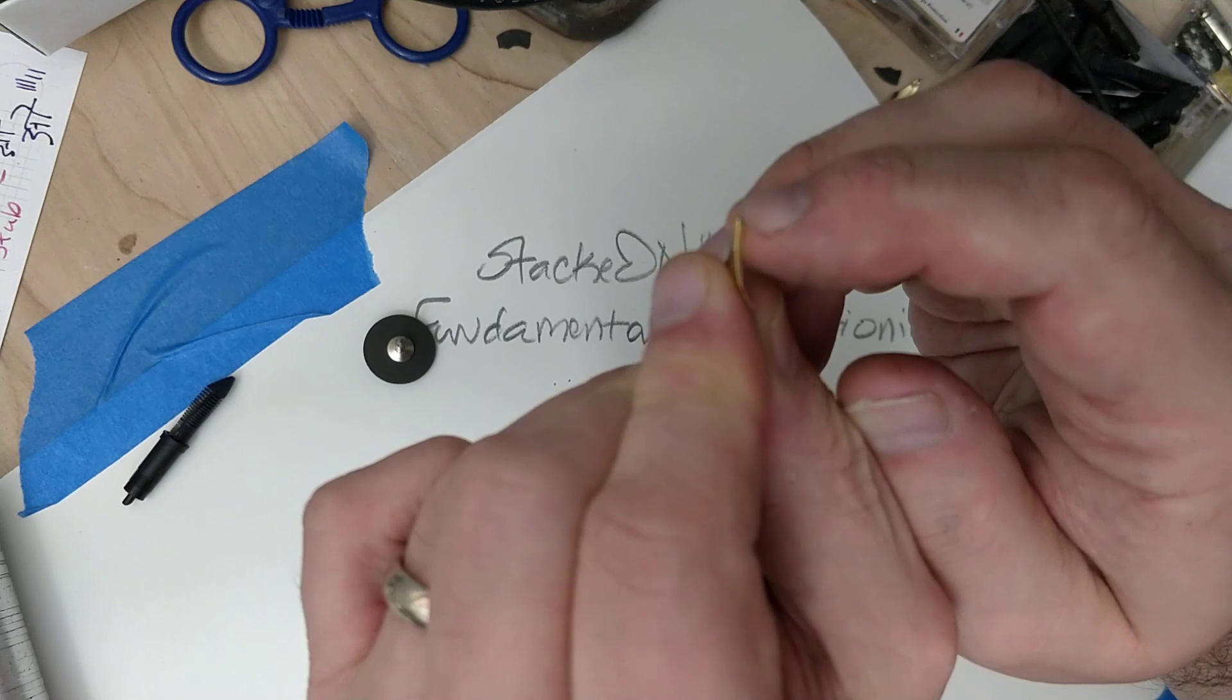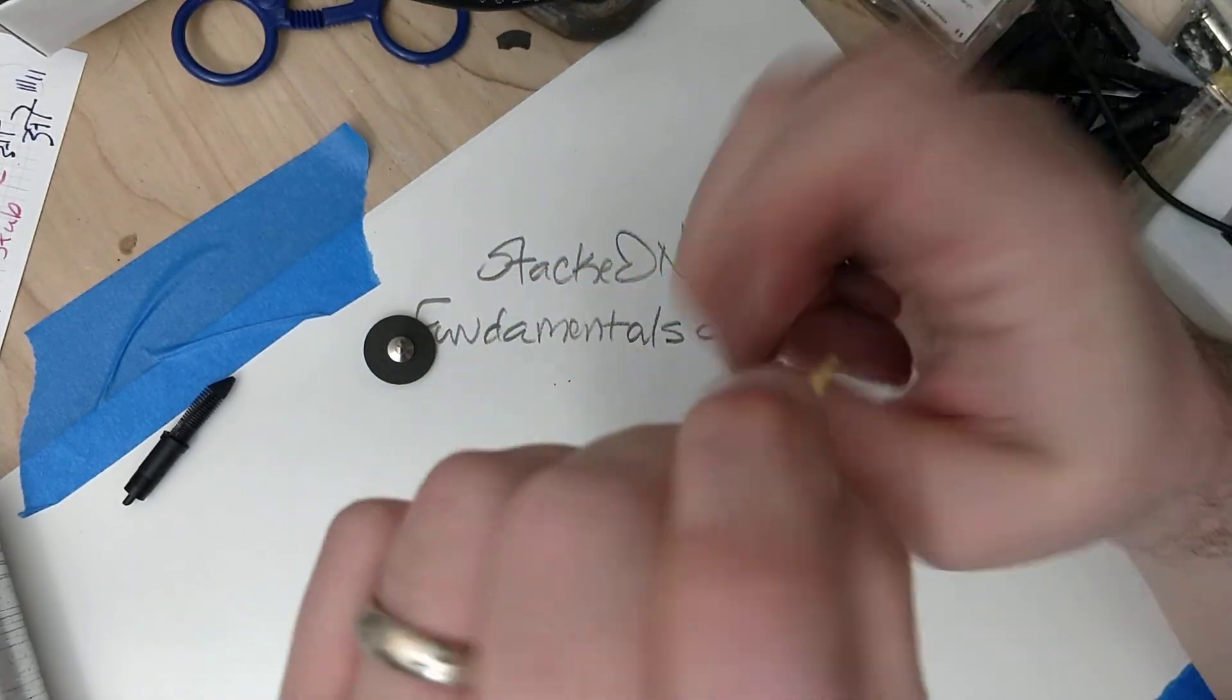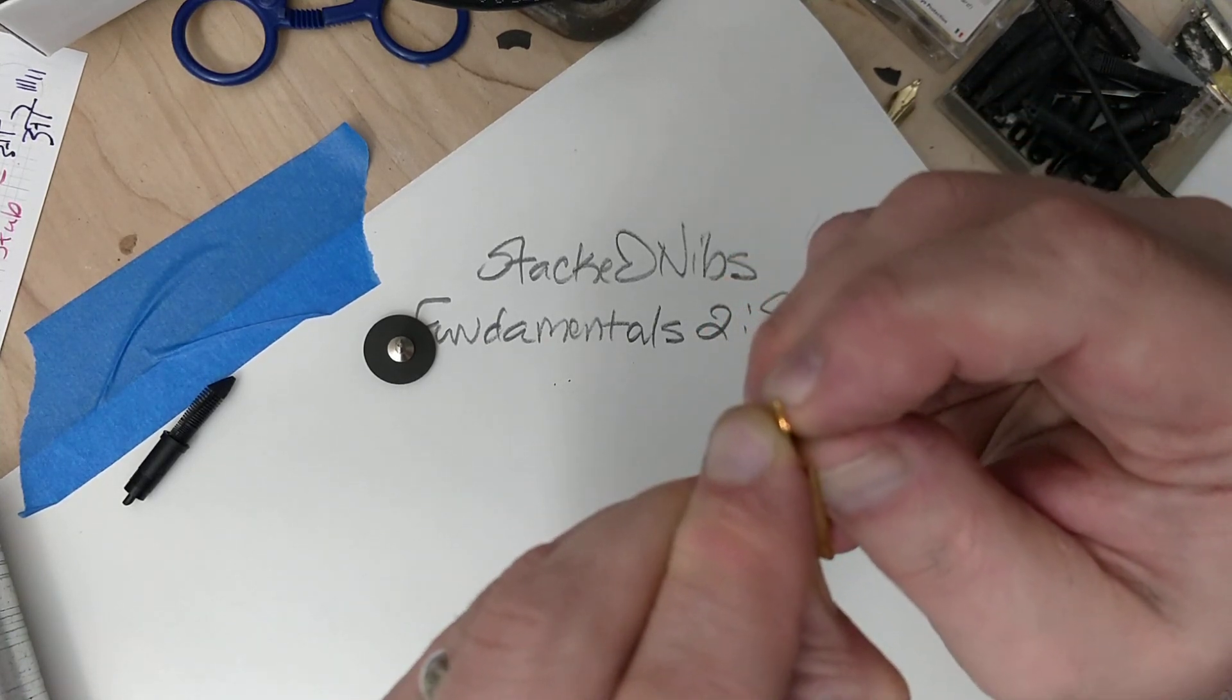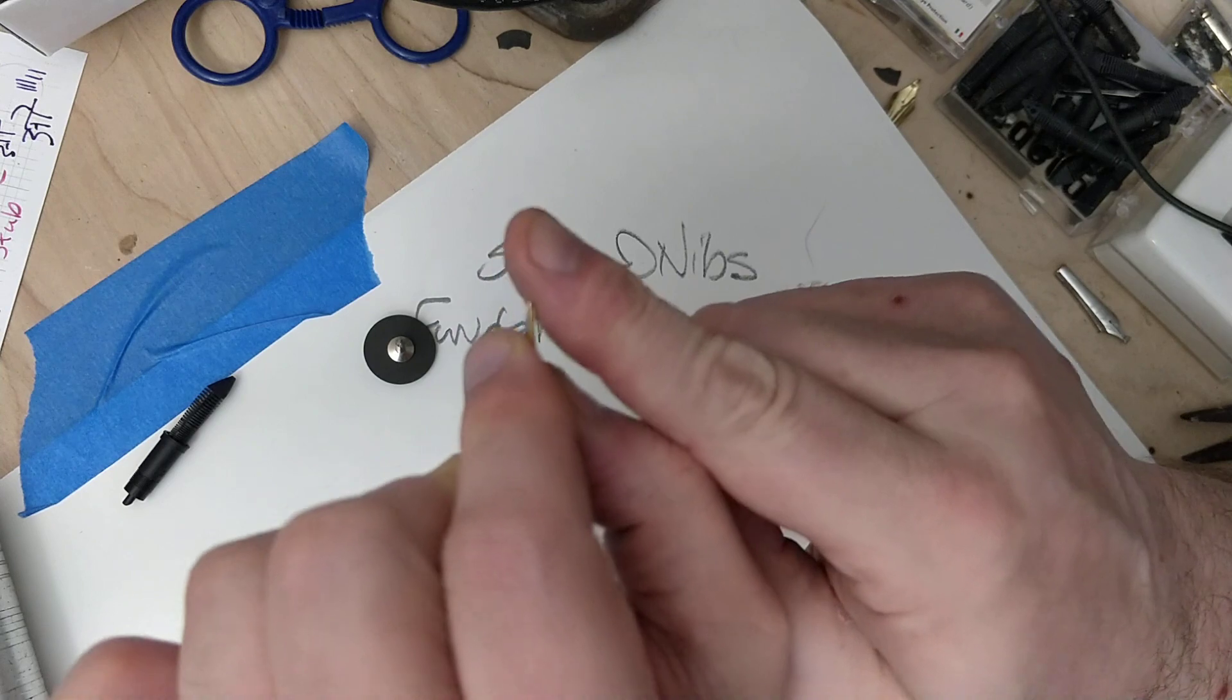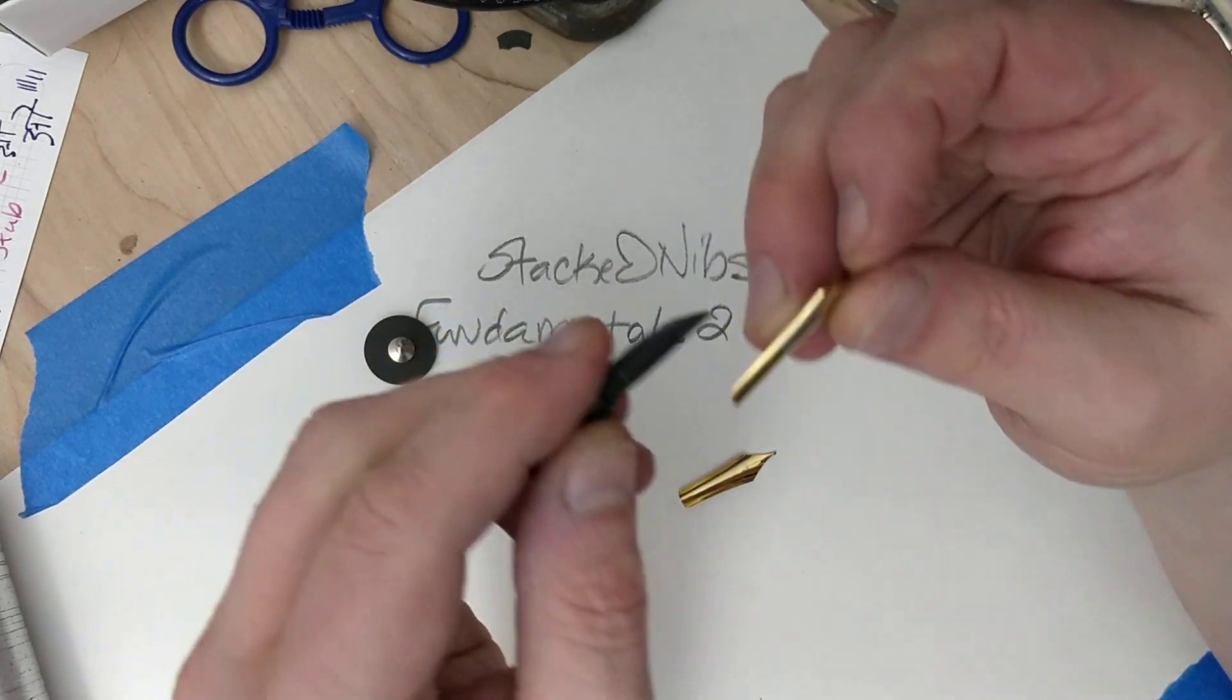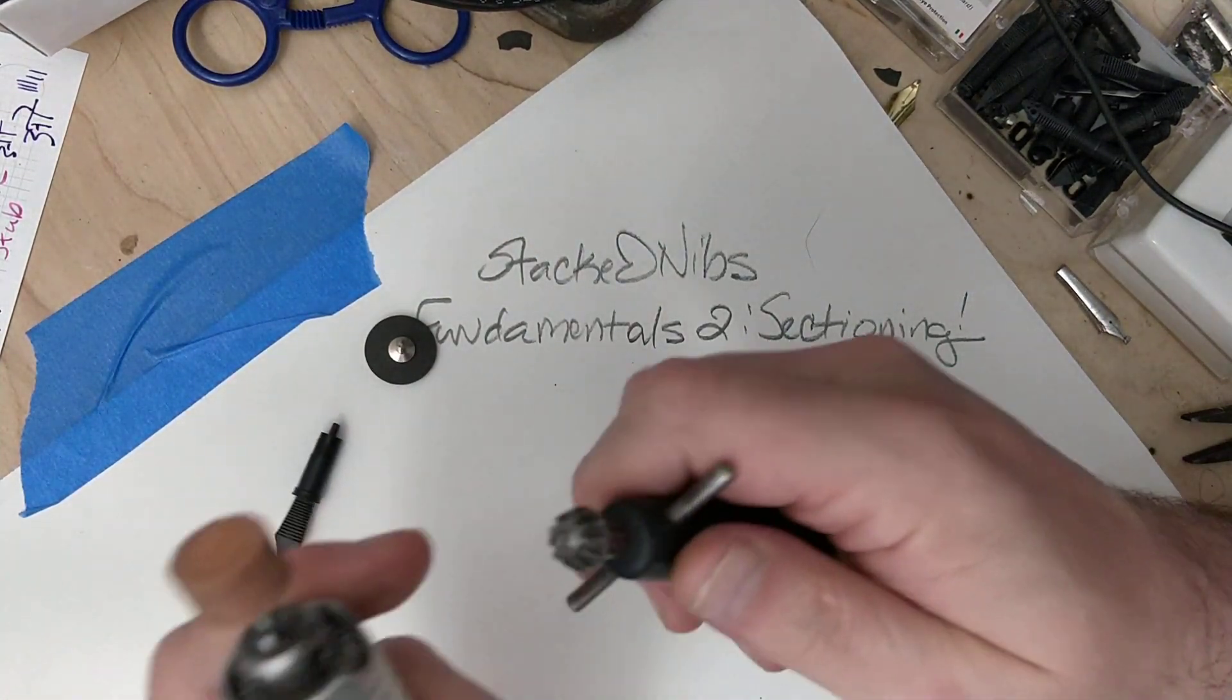This is also where you determine what the angle is, which determines how much line variation you're going to get on your horizontal. When you grind it, remember, part of what you're doing is taking off the tipping material. You can't put that back on, so make sure you've got things pretty much where you want them, as far as this angle goes. Okay, so, top nib. Sometimes, if you're doing more than two layers, you really want to keep track. So, this is the bottom one. I know it is because it's in a feed.